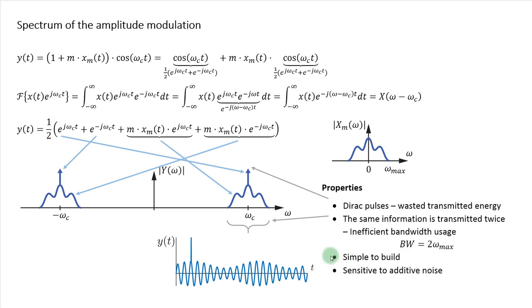A couple more properties: amplitude modulation is very simple to implement, which is favorable. However, next to the inefficient bandwidth usage, it is also quite sensitive to additive noise. If you have an AM signal transmitted wirelessly and there is a lightning strike, a spike is added to your received signal. During demodulation, this spike affects the immediate amplitude of the received signal, creating interference in the demodulated output. Later you will see there are other types of modulation which are able to reject this type of additive interference.